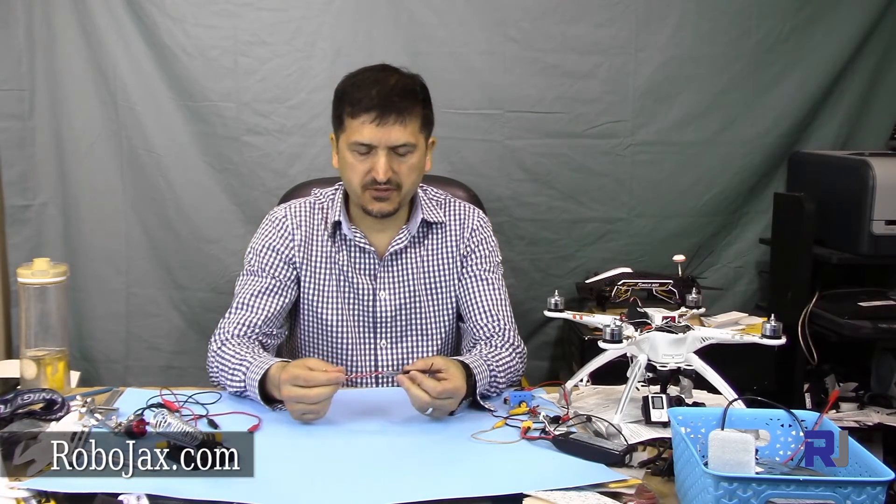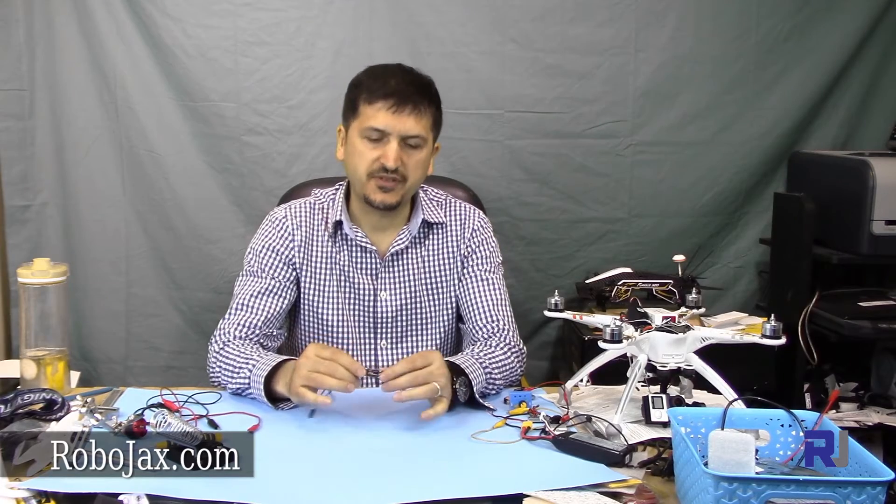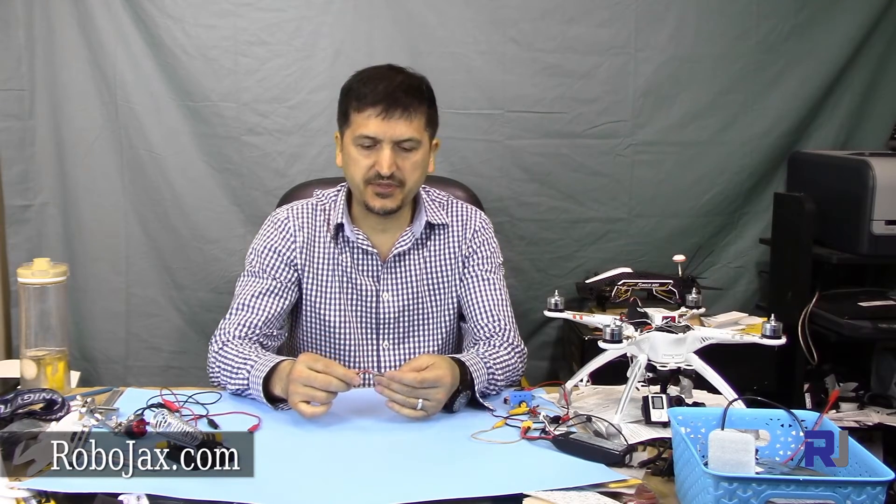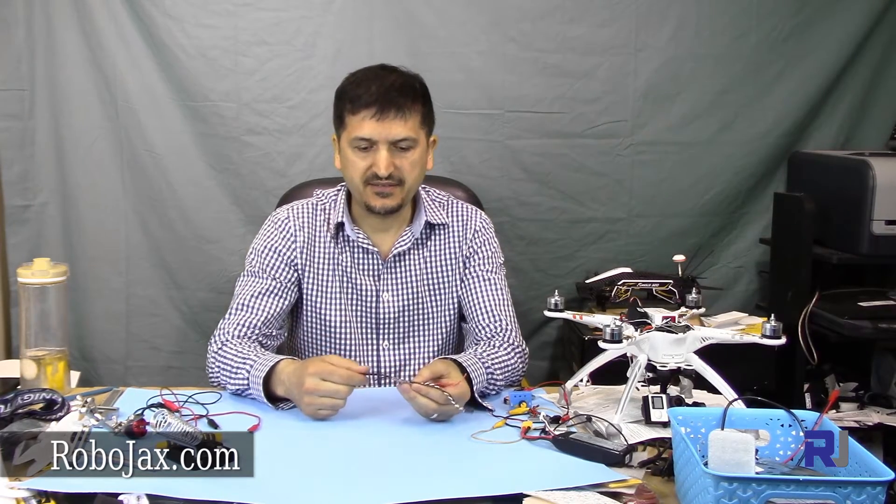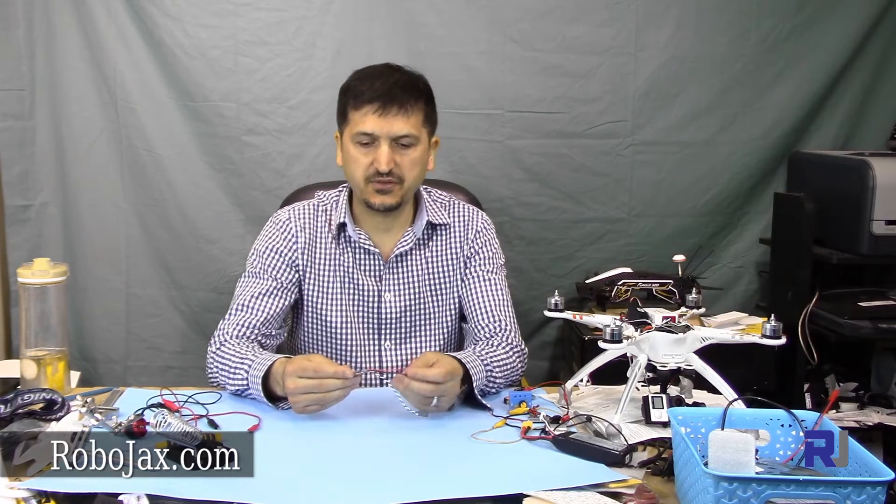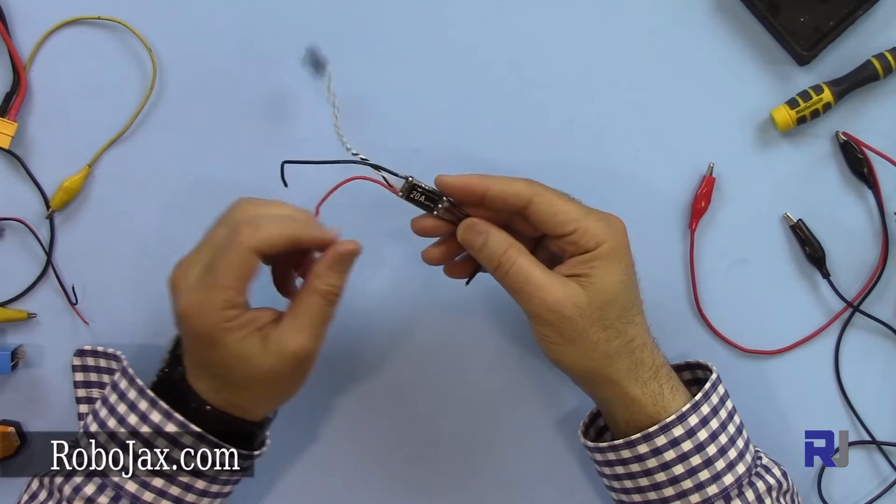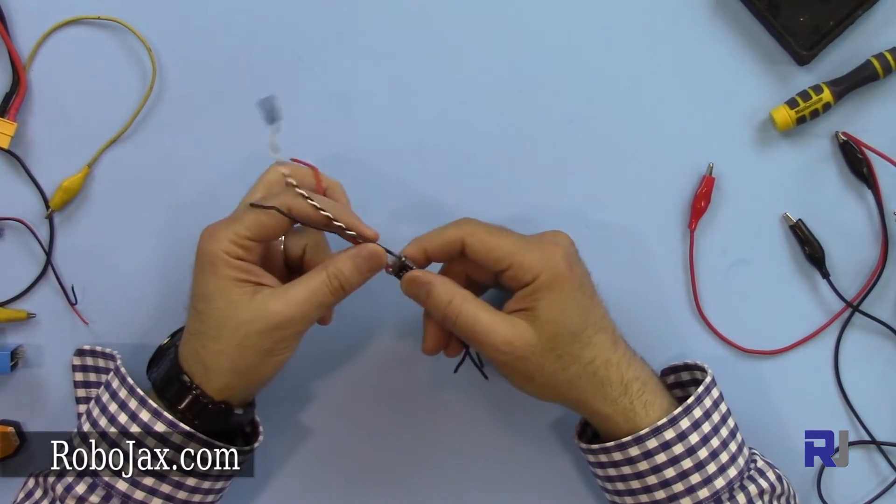Hello everyone, welcome to another video from Robojax. In this video, we're going to introduce the Futaba Little Bee 20 ampere AC ESC. This is up to AC, meaning it doesn't have BEC or doesn't have 5 volt output to supply voltage for your flight controller.